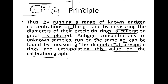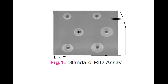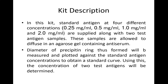This is how it looks in a real figure — these are the holes dug in which we pour the antigens, and the entire plate consists of antiserum. When the antigen reacts with the antiserum, it results in formation of these white precipitating circles or rings, which help us determine the concentration of antigens.